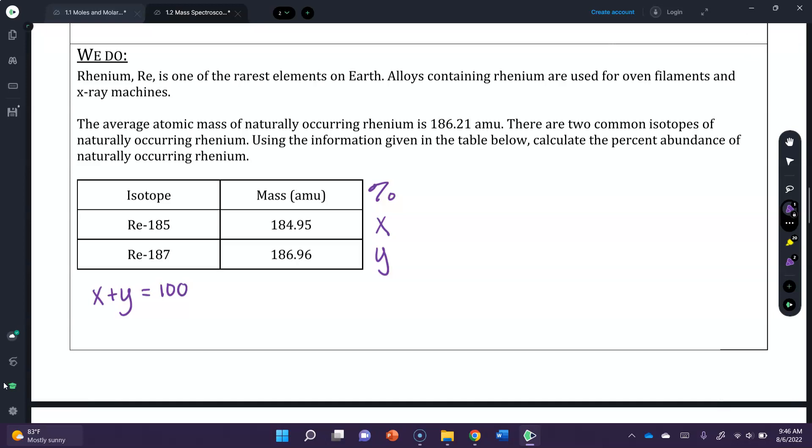That's tricky. And then we also, going to our average atomic mass formula, know that 184.95x plus 186.96y over 100, should give us our average atomic mass, which in this case, and I'm going to erase it and put it in, has to be from the periodic table, 186.21 amu.